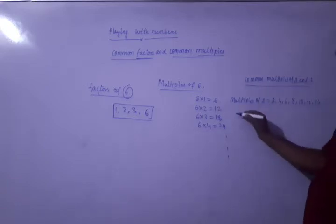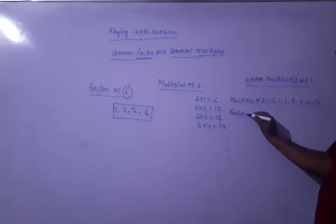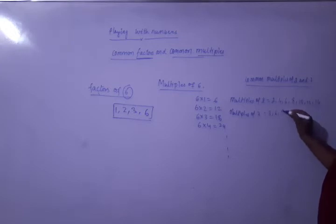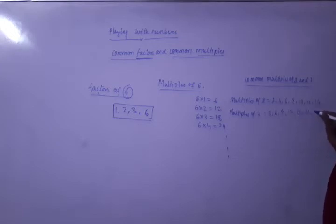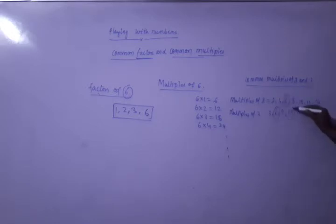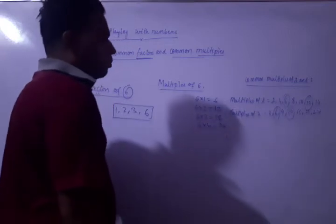Now, the multiples of 3 are: 3, 6, 9, 12, 15, 21, 24. We have to see which numbers are common. 6 is common, then 12 is common.